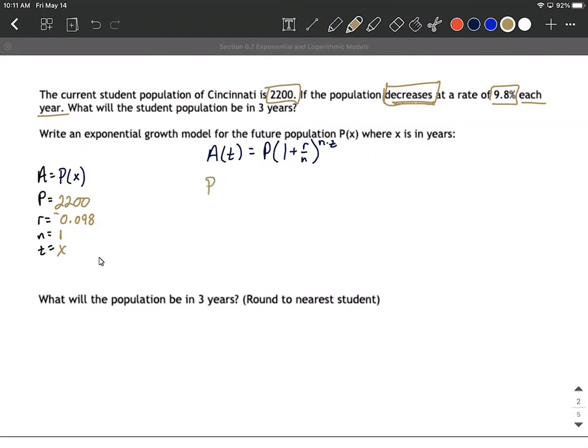So we can say P of X. That goes in on the left hand side. And P for population, not for principal. But my principal, what we start with is 2200. So that's going to go in for the P on the right hand side.